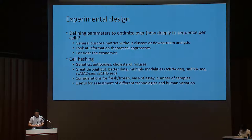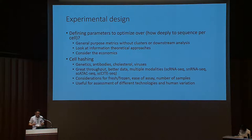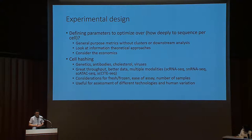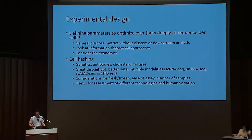We finished with a discussion on optimal experimental design. I posed the question that we need to figure out a way to define what parameters to actually optimize over — for example, do we really want to optimize how deeply we sequence per cell? There's a general consensus to have some general purpose metrics without downstream analysis like clustering or differential expression, but I also suggested looking at information theoretical approaches because in that case we care about what the downstream analysis is.